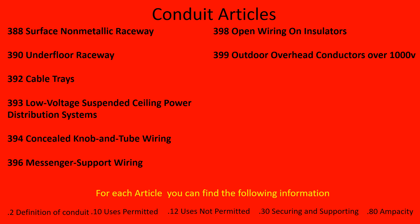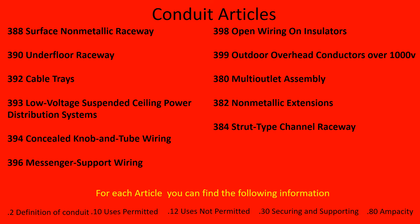And that wraps us up. Like I said for all the cables, it's super important that you go check this out — the dot two sections will give you the definition of that conduit, dot 10 will tell you where you can use it and in what manner, dot 12 will be the uses not permitted, dot 30 will be the securing and supporting, and dot 80 will cover any ampacity considerations if conductors are involved or it's a wiring method.